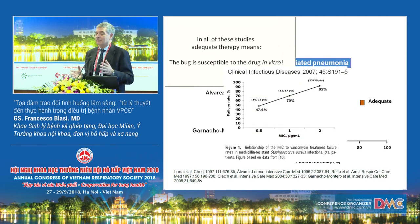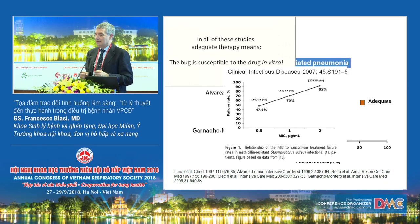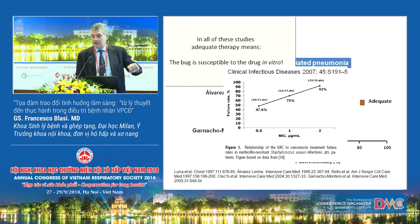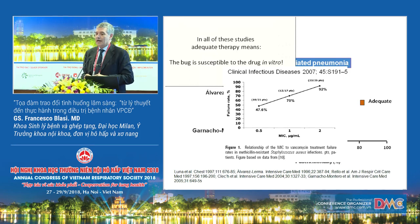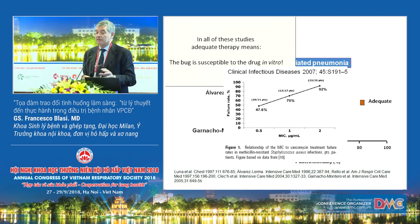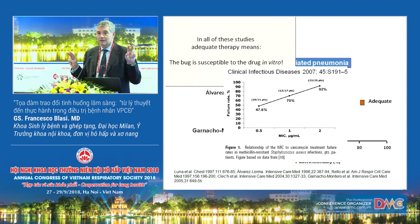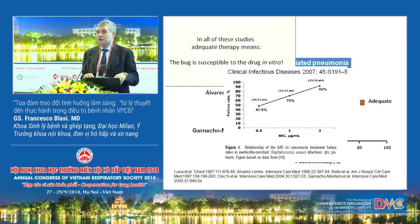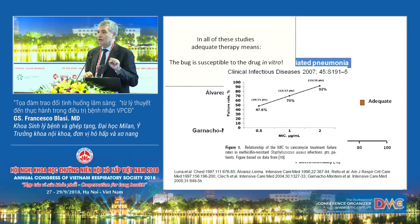I put here the example of vancomycin. With a MIC of one, you have a failure rate of about 30–70%. So the bug is susceptible, but the result is not good. Because you have to take into account many things, not only the MIC of the bug.